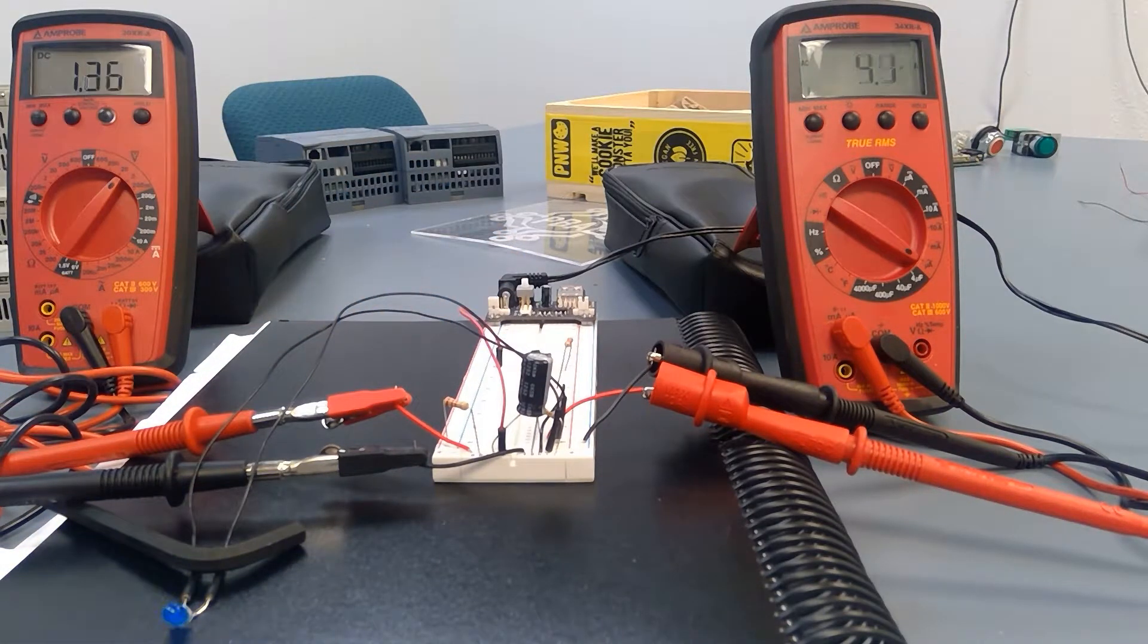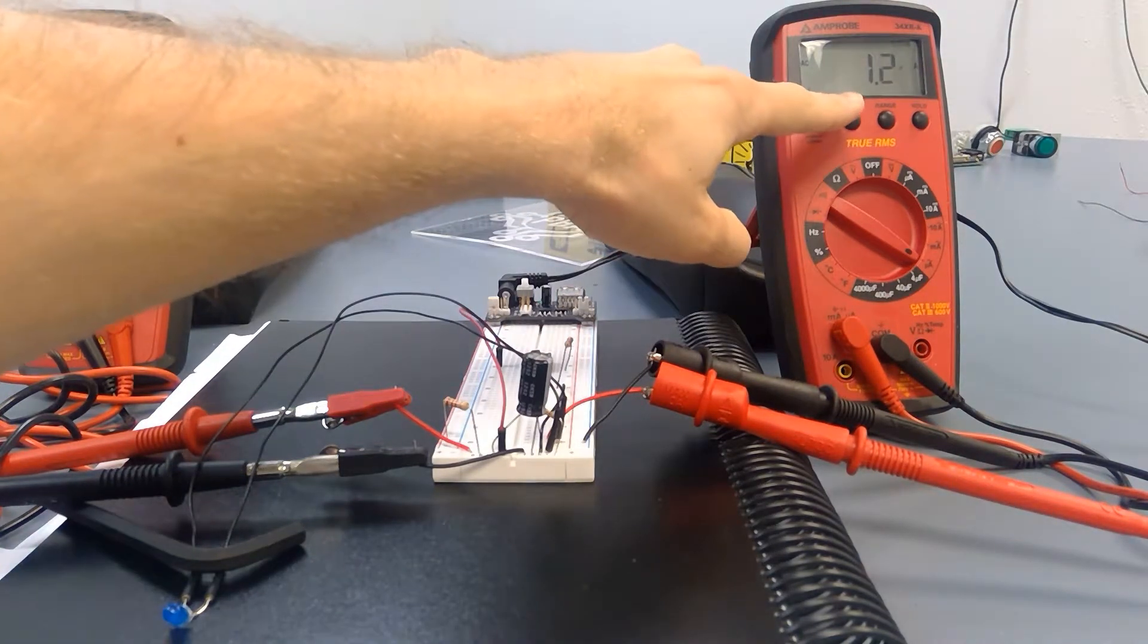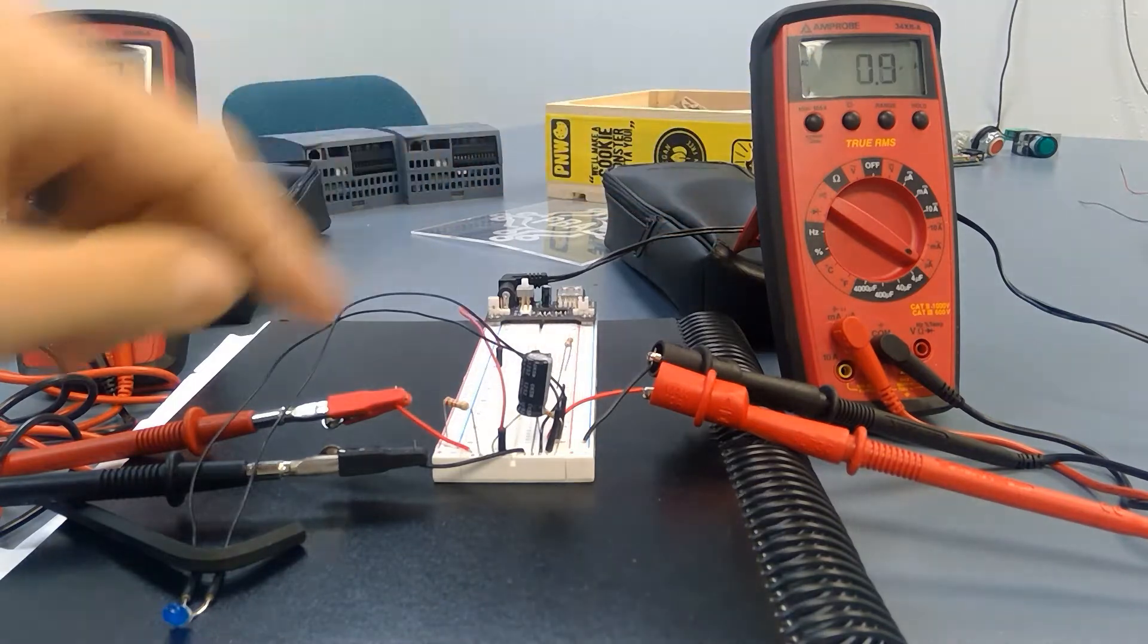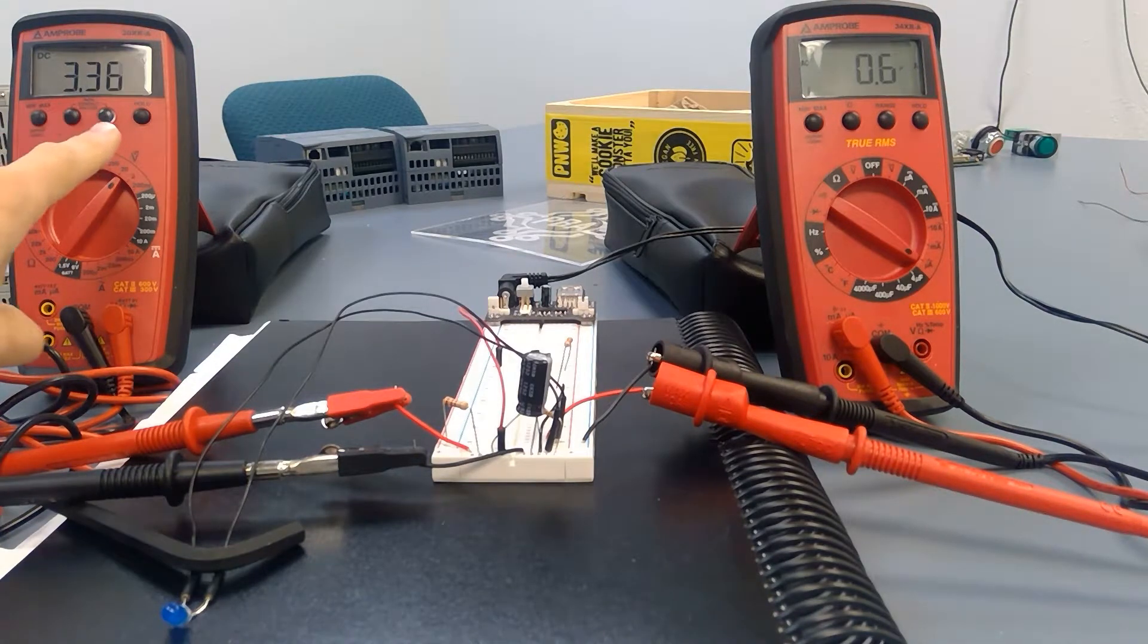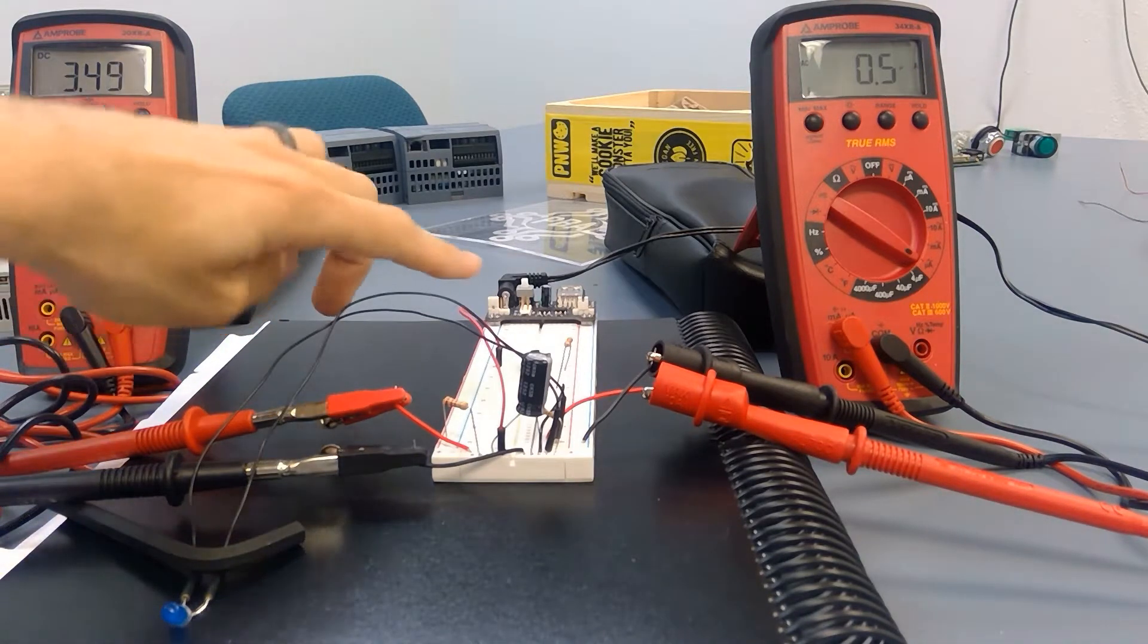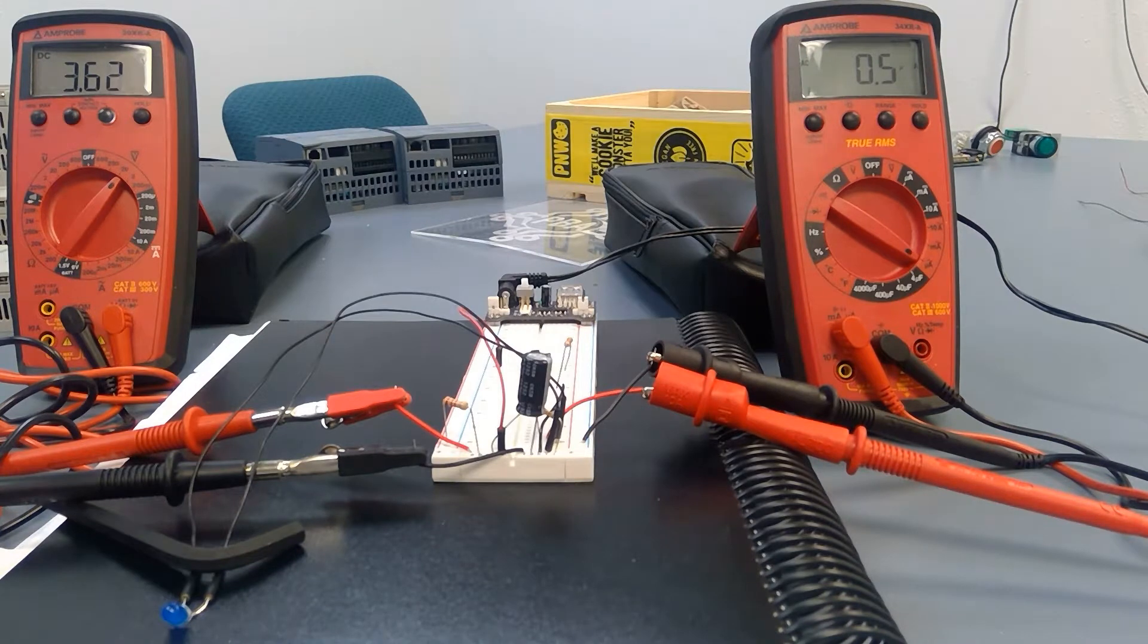And as that charge is increasing on the capacitor, the current is dropping. As the current drops, we would kind of expect the LED's brightness to go down, and that's exactly what happened. The LED's brightness went down, and the DC voltage will continue to charge. I've got this set to a 5 volt supply. It's going to charge until the capacitor reaches about 5 volts. That's going to get slower and slower the closer it gets to fully charged. And it's getting closer to the 5 volts, and we'll expect it to continue slowing down more and more.